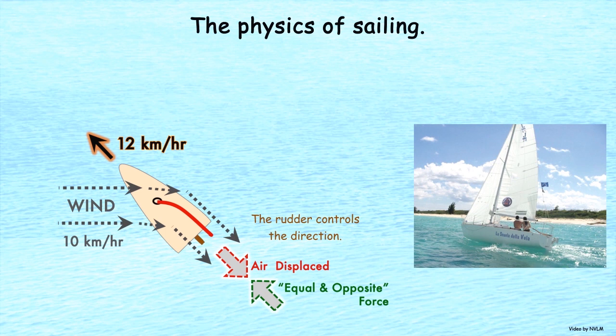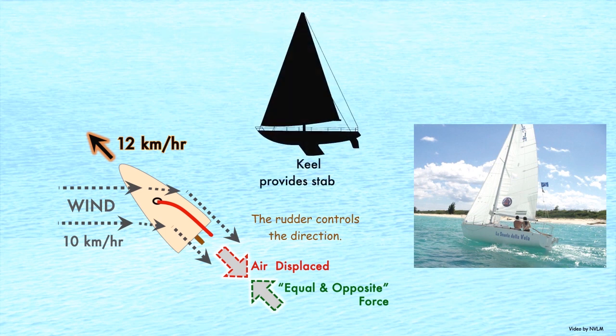The rudder provides the direction of the boat. The keel prevents the boat from being pushed downwind and from tipping over.